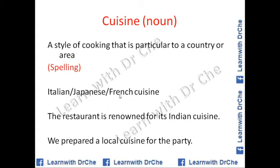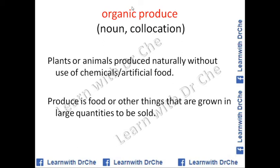Collocations for cuisine: Italian cuisine, Japanese cuisine, French cuisine, Indian cuisine. For example: 'The restaurant is renowned for its Indian cuisine,' and 'We prepared a local cuisine for the party.' Cuisine is very important — note it down in your notebook.